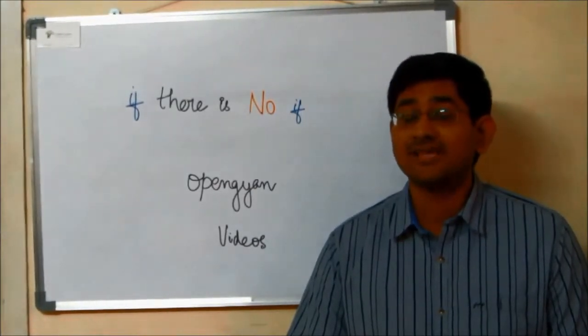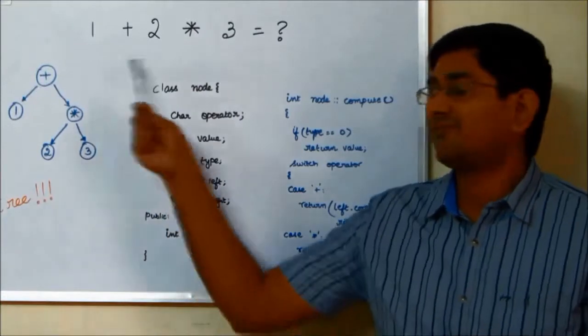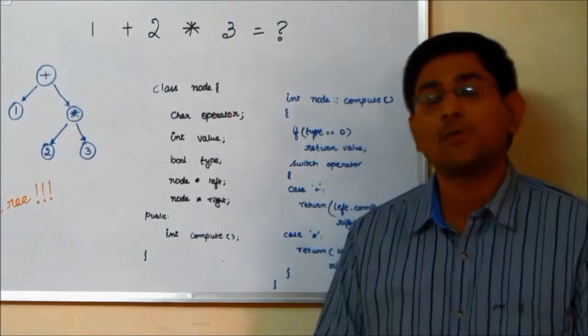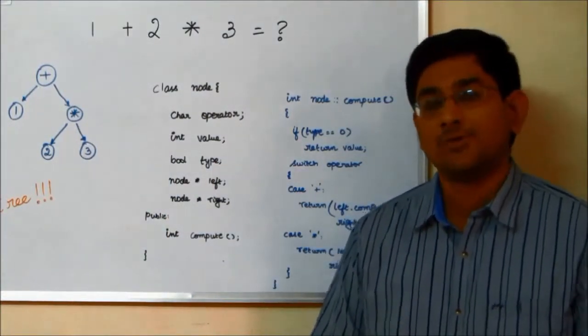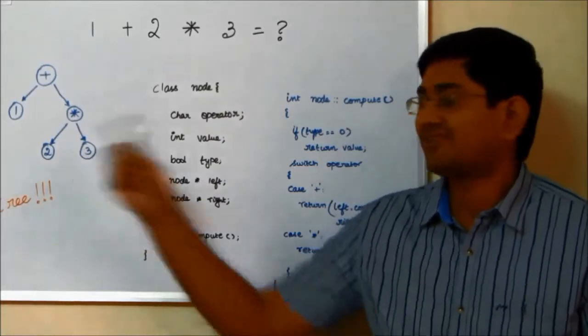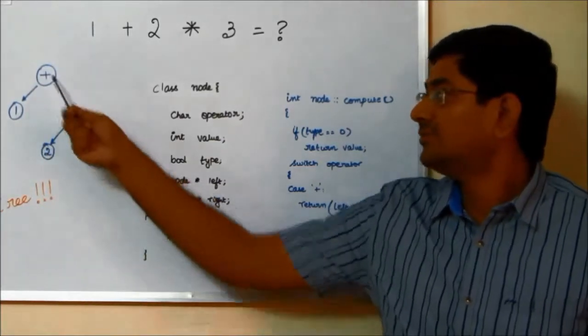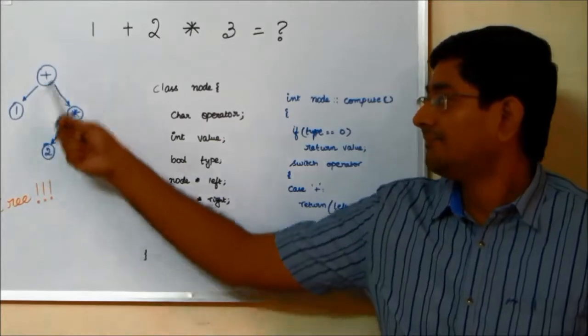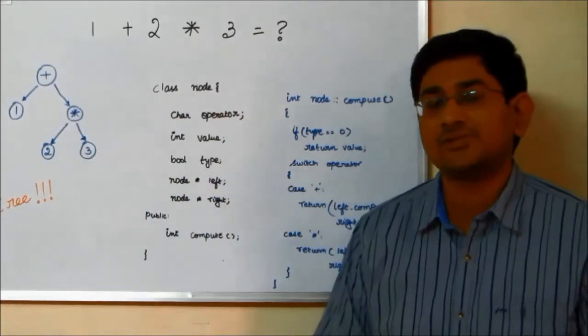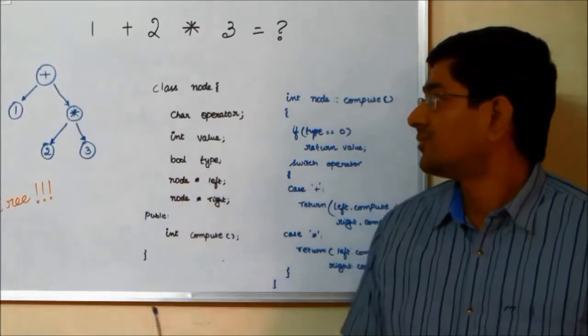What if there is no if? Let's say I want to compute the value of 1 plus 2 into 3 and I want to store it. And I want to do it in the object-oriented way. So how about I do it in the form of a tree?